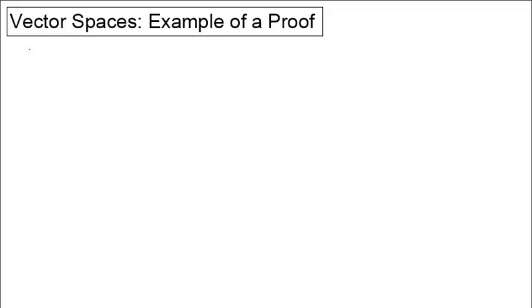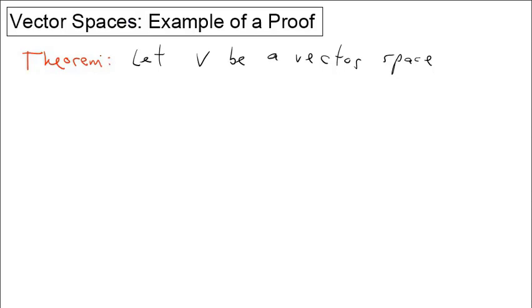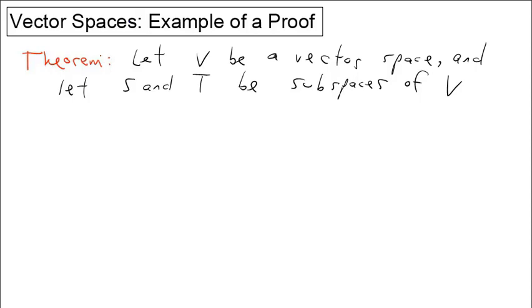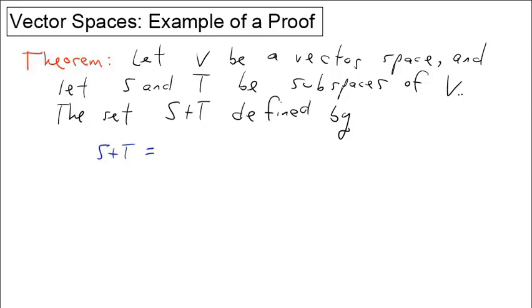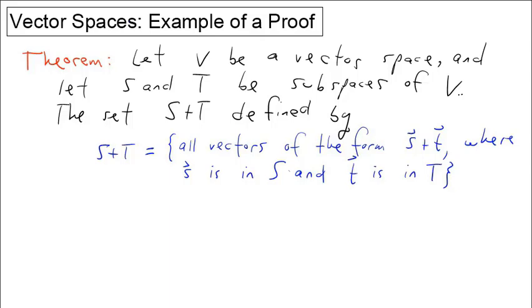Here's an example of a formal proof involving vector space concepts. In particular, we're going to prove the following theorem. Let V be a vector space, and let S and T be subspaces of V. Consider the set S plus T, defined as all vectors of the form little s plus little t, where little s is in S and little t is in T. We're going to prove that S plus T is a subspace of V.